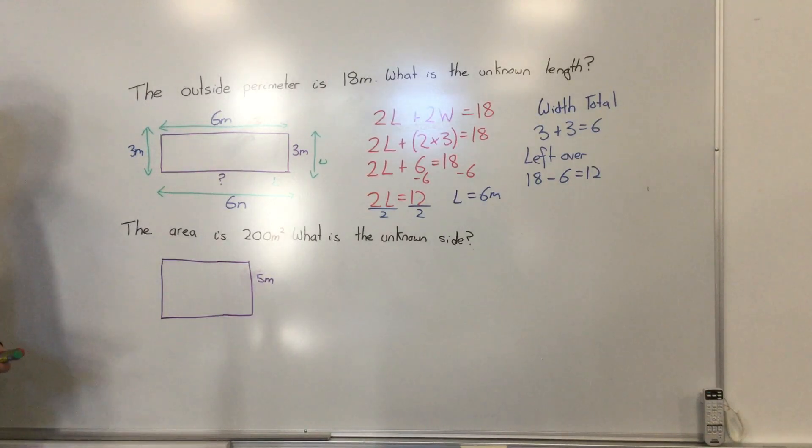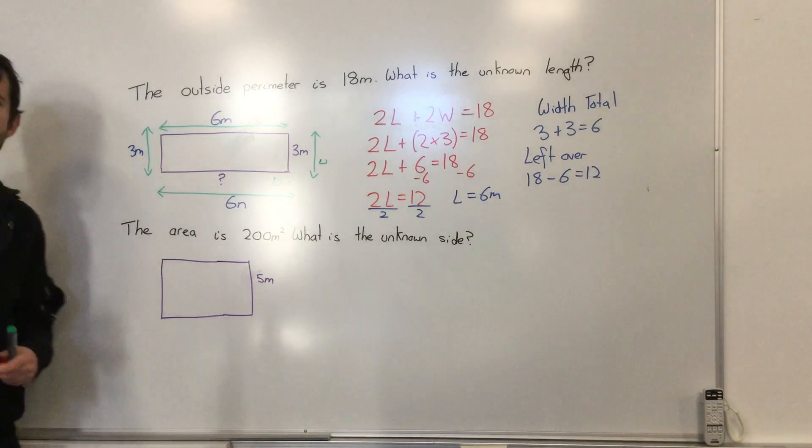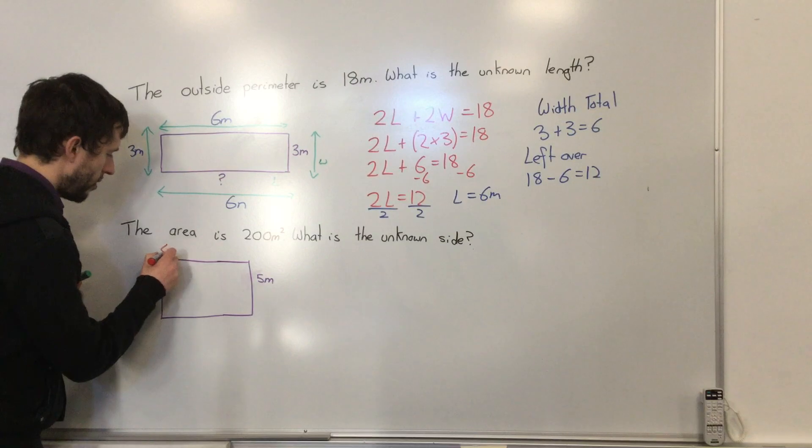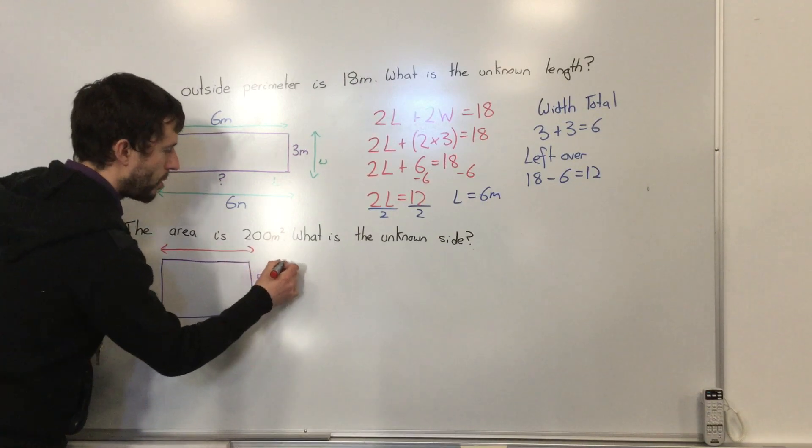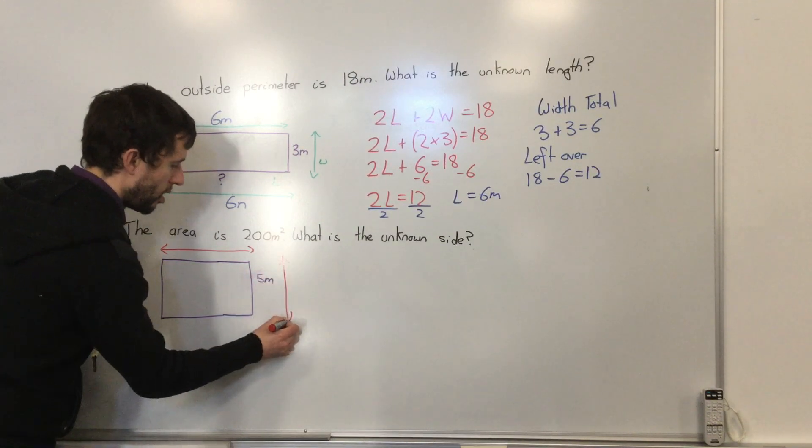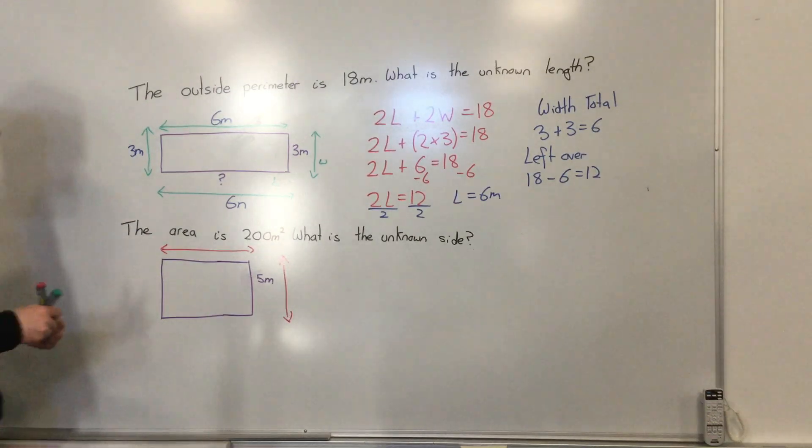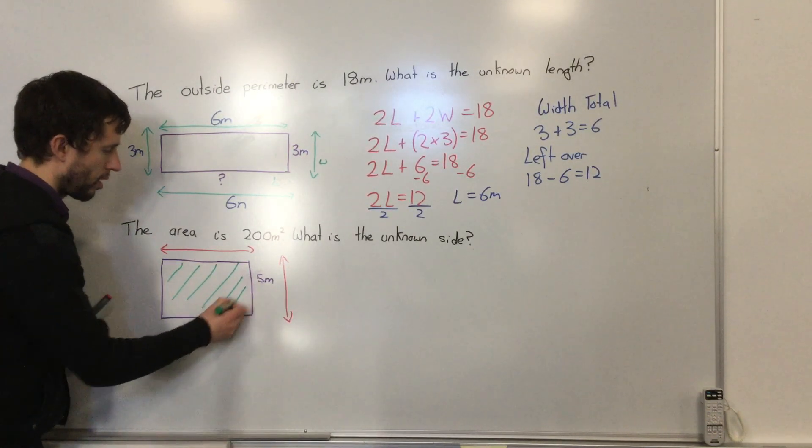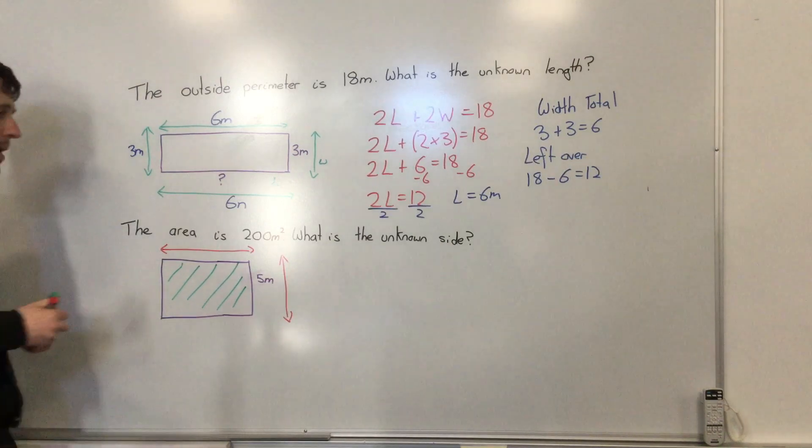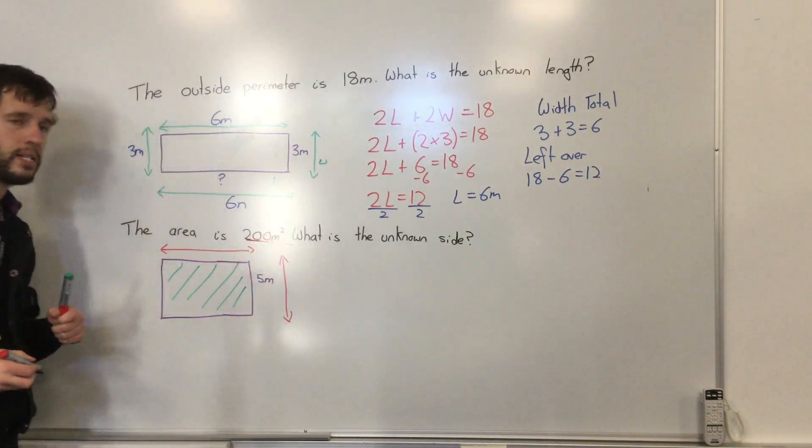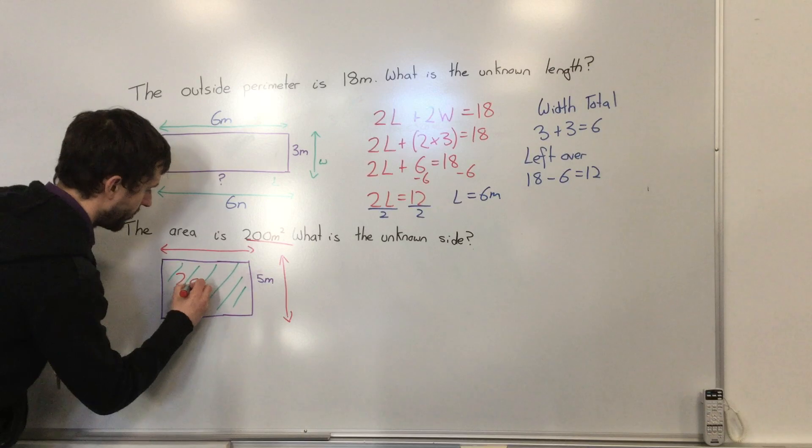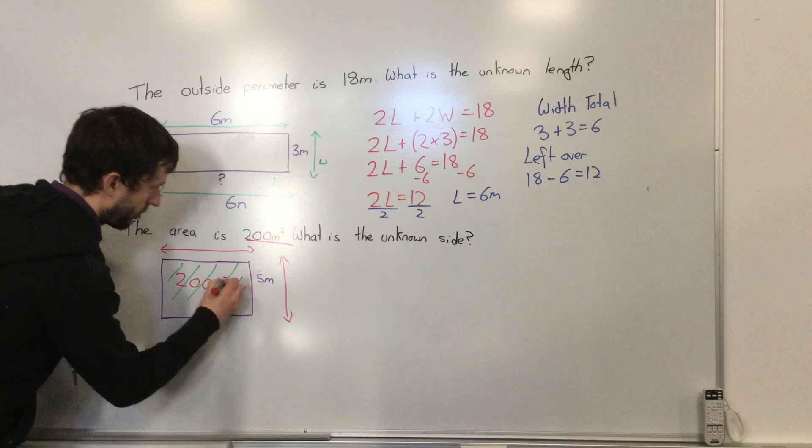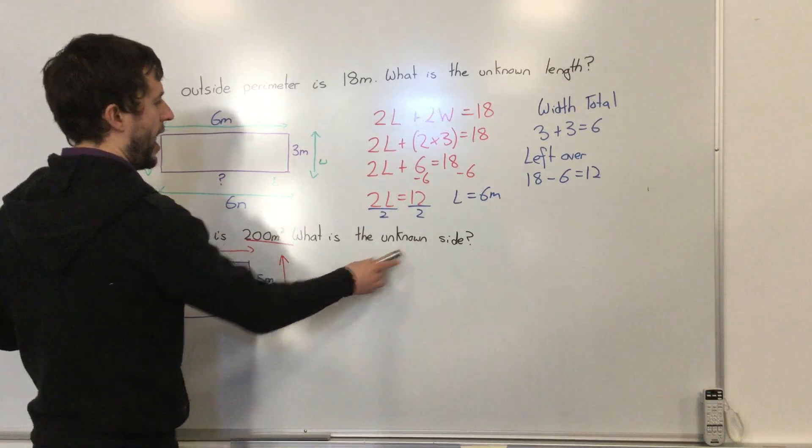Likewise with area. When we're talking about area, we are talking about length multiplied by width, and that gives us our space in the middle. Here we know our space is 200 meters squared. We are wanting to find the unknown side.